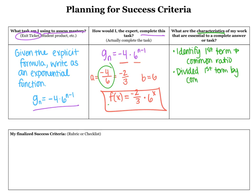...by the common ratio. And then I had to put it together — I wrote it in A times B to the x form. I also want to make sure that my students know they have to include the f of x part, so I replaced that g sub n with f of x. I also reduced.